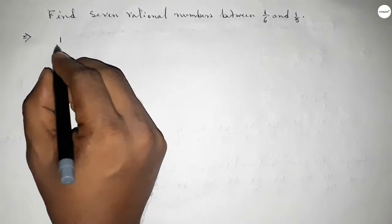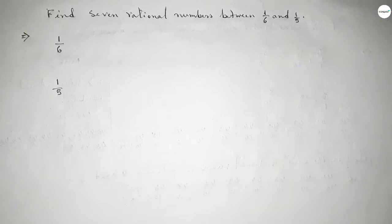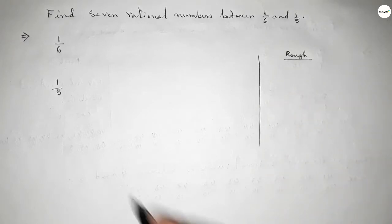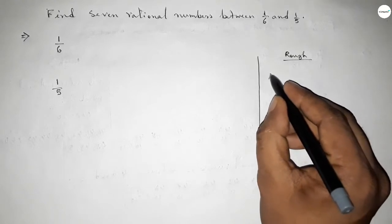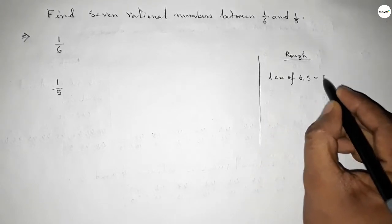Now roughly discussing here some important calculation. The denominators of both are not equal, so first we have to find out the LCM of 6 and 5, and their product is the LCM. So this is 30.